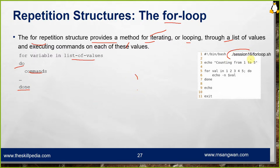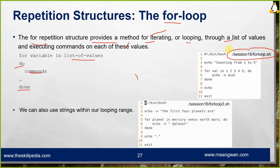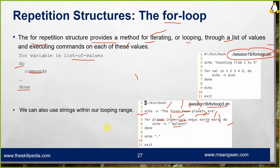We can also use strings within our looping range — see loop3.sh. Example: for planet in mercury venus earth mars; do echo planet; done. By definition the separator is space or tab, so mercury, venus, earth, and mars are four different values. Each value goes into the planet variable one at a time, and the four values are printed individually.